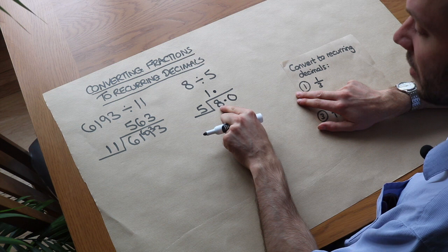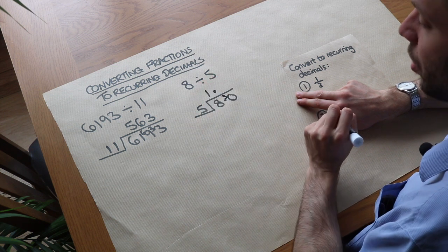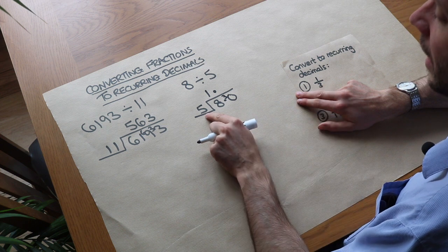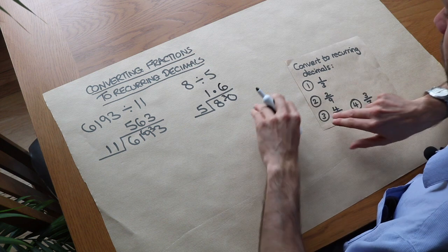And we said there was a remainder 3. 5 went into 8 one time and there was a remainder 3. And now we have somewhere to put that remainder. So we can then say how many times does 5 go into 30? Well it goes in 6 times. So 8 divided by 5 is 1.6.